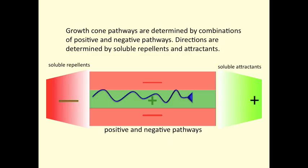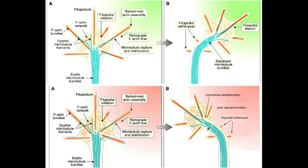In addition to surface-bound molecules that mark pathways, gradients of soluble attractive and repellent molecules tell growth cones what direction to move along the adhesive pathways. These gradients of attractive or repellent guidance molecules trigger intracellular gradients of signals that either favor cytoskeletal advance, for attractants, or cytoskeletal retreat, for repellants.